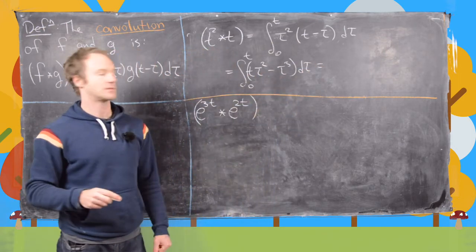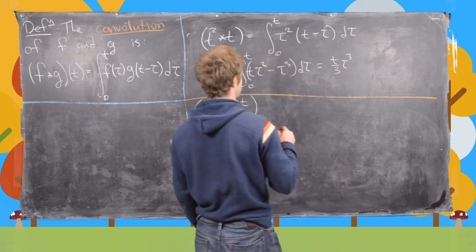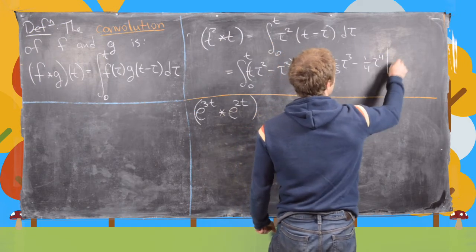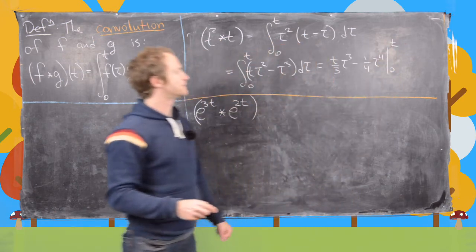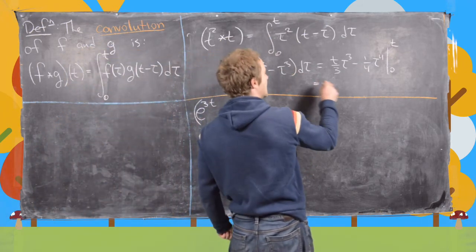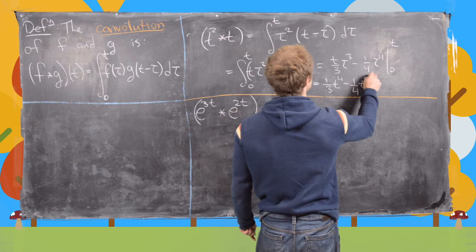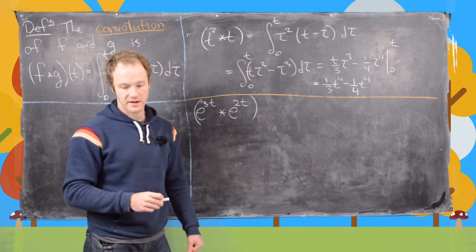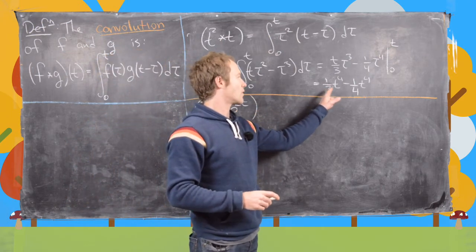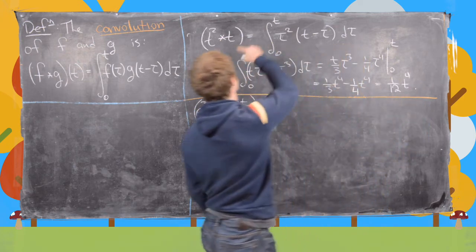Integrating both terms, we get t/3 · τ³ minus 1/4 · τ⁴, evaluated from 0 to t. Plugging in 0 gives 0, so we just need to plug in t, giving 1/3 · t⁴ minus 1/4 · t⁴. That is the same as 4/12 minus 3/12, which equals 1/12 · t⁴. So the convolution of t² and t is (1/12)t⁴.